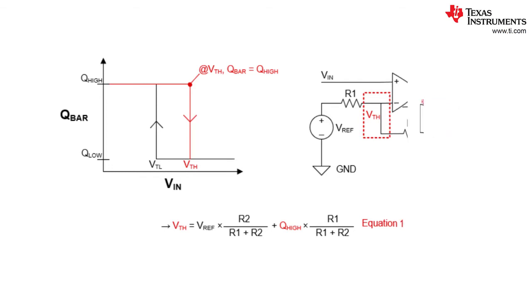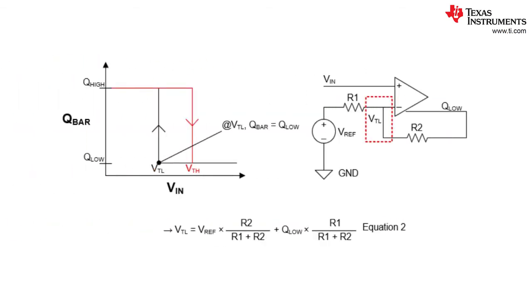Equation one is the equation that we will use to establish the upper hysteresis threshold voltage. We must now solve for the threshold voltage when the Q bar output is in its low state and has a value of Q low. Using the same techniques shown in previous slides we can solve for the lower threshold voltage VTL. This value is illustrated by equation two.